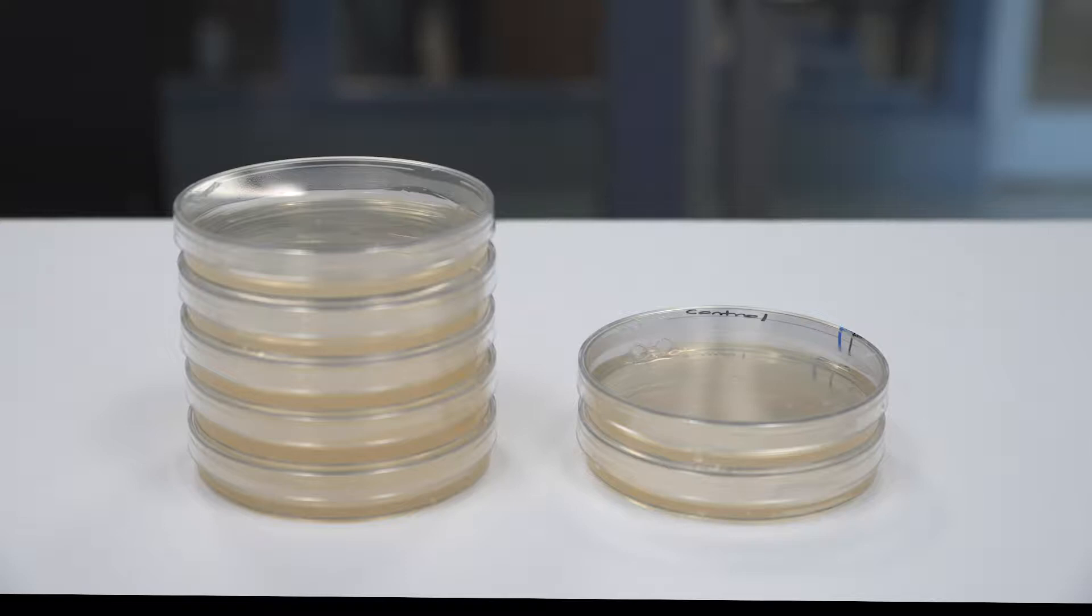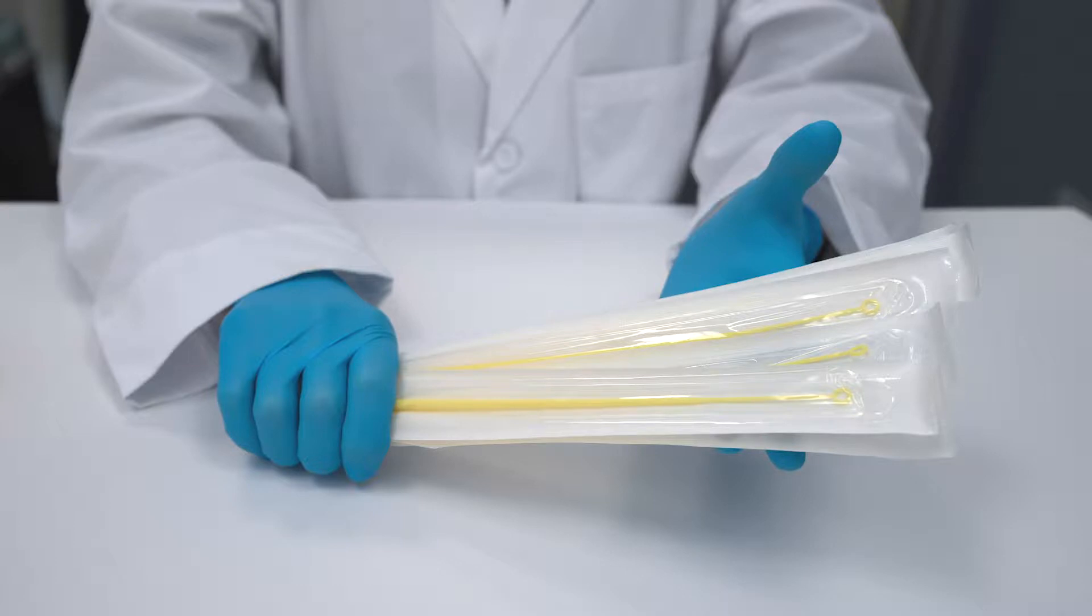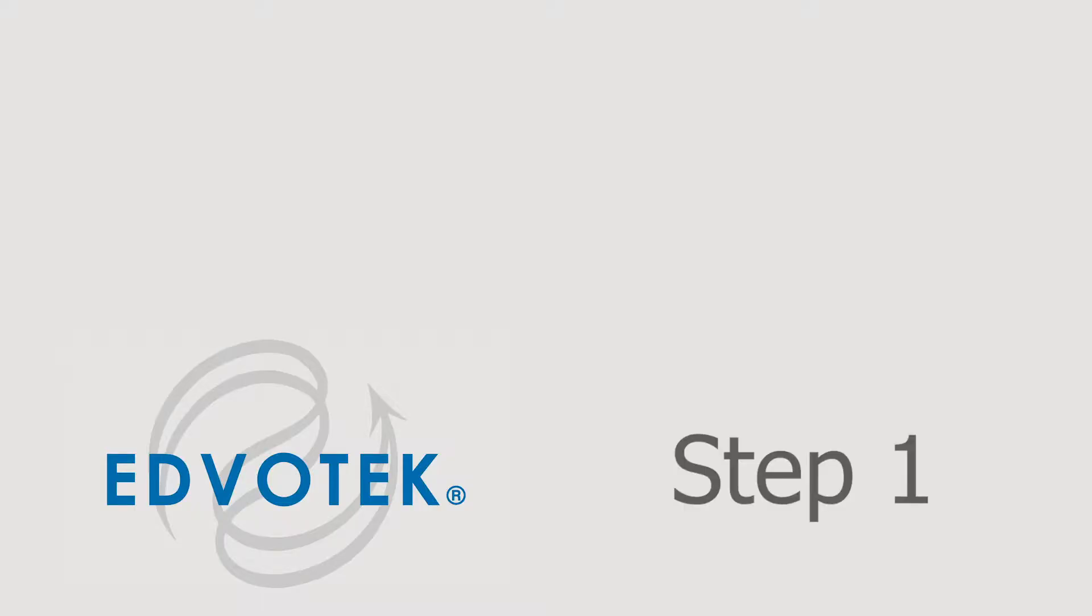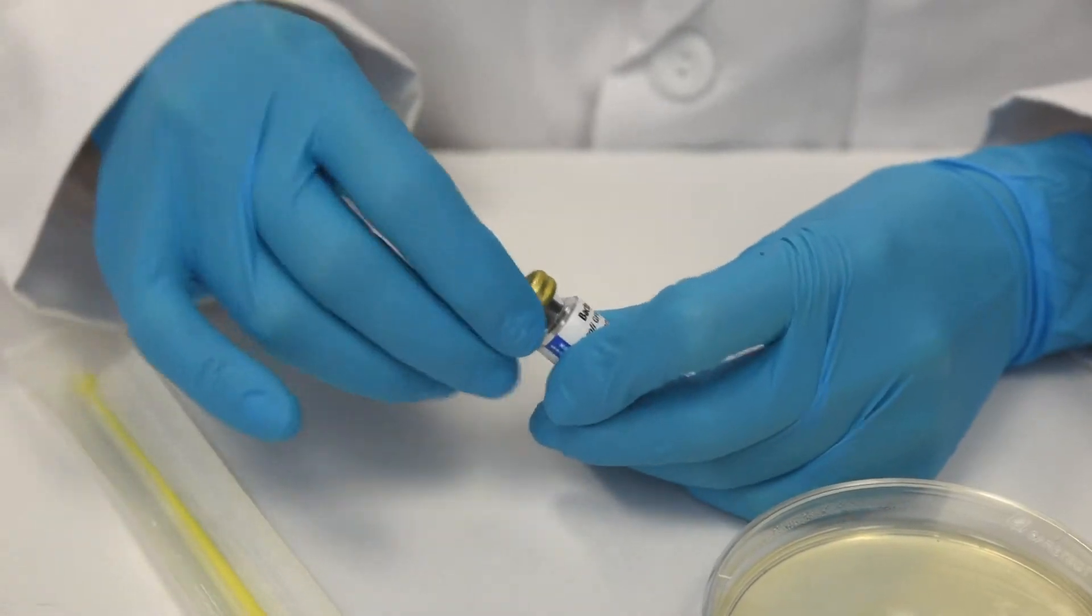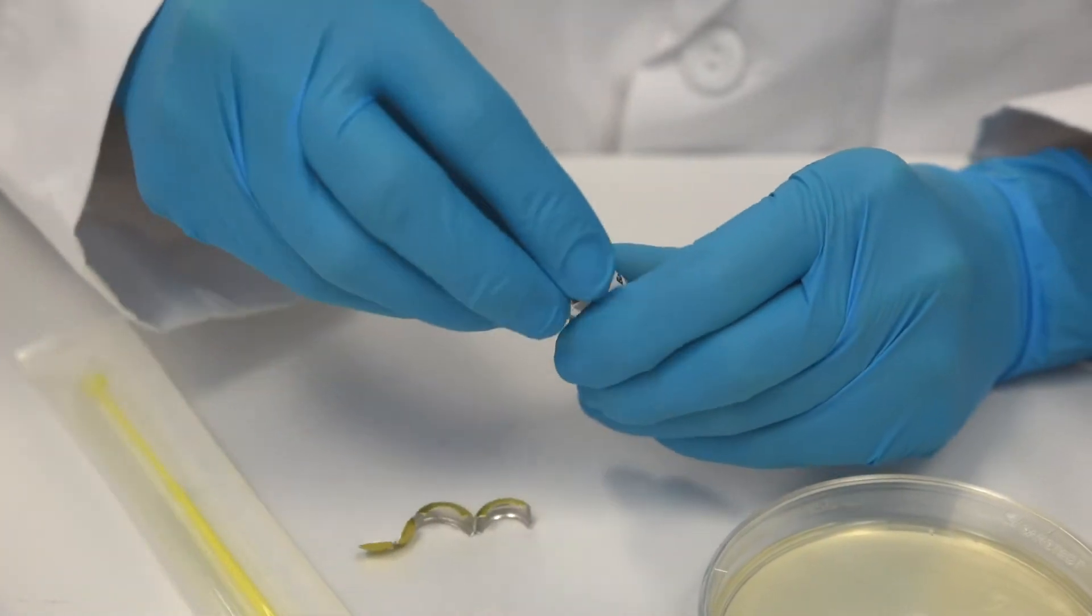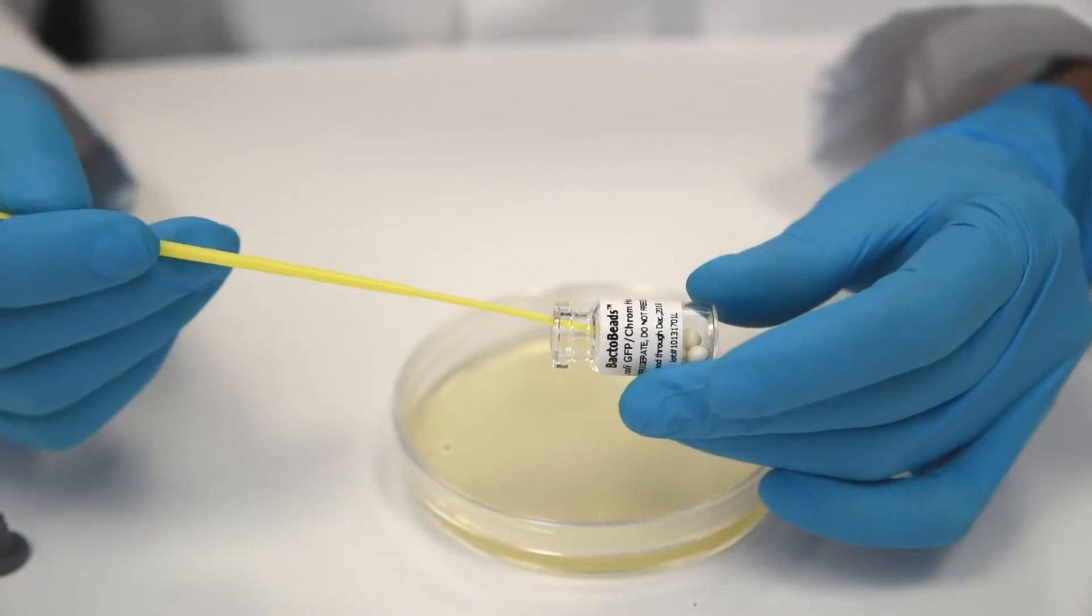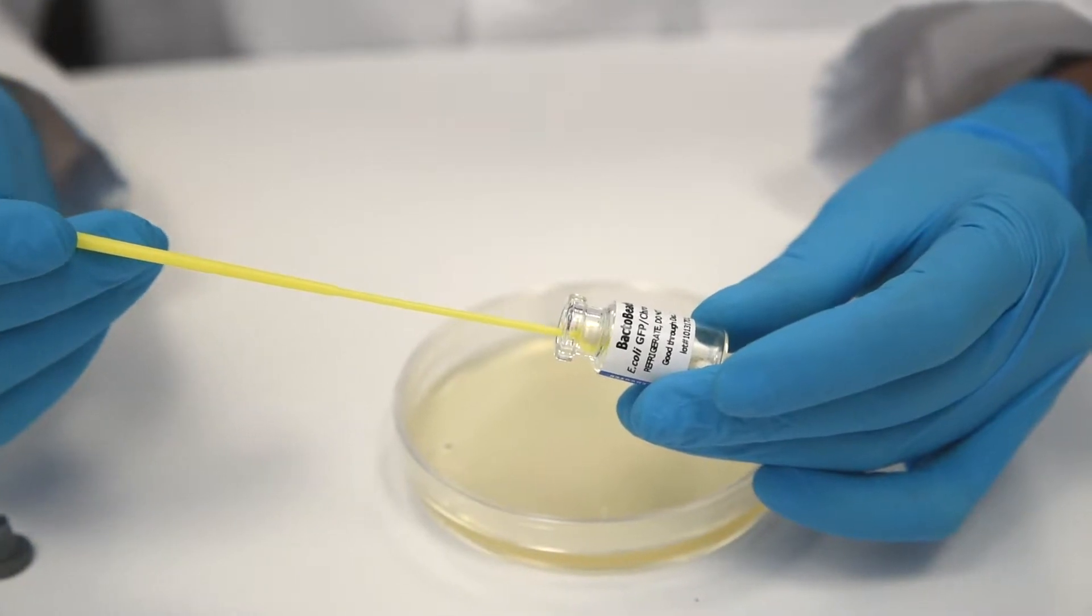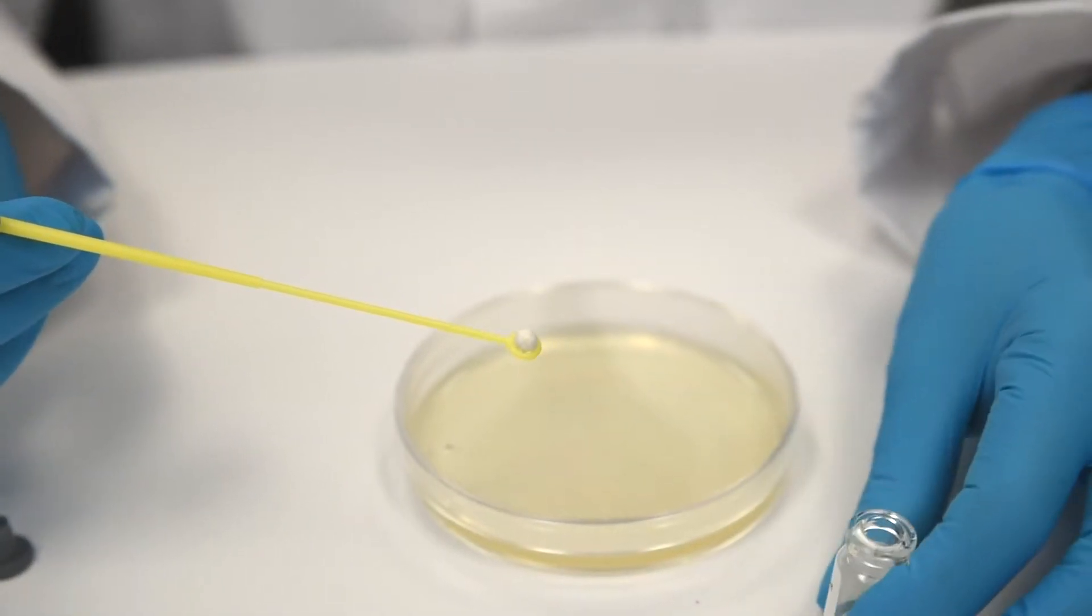You'll also need Sterile Inoculation Loops and Recovery Broth. Step 1: Remove a single Bacto Bead from the E. coli GFP Host vial using a sterile inoculation loop. Using aseptic technique, transfer the bead to the edge of one of the large LB source plates and replace the lid.